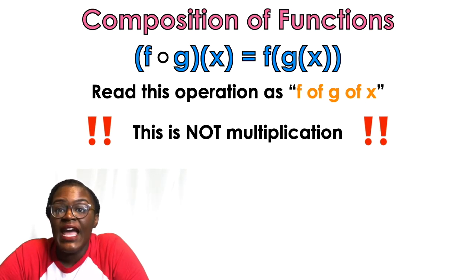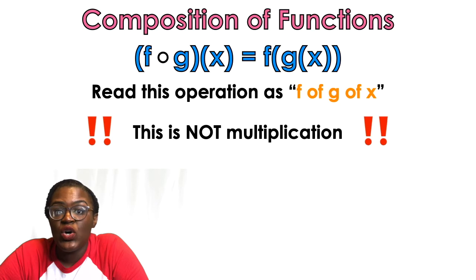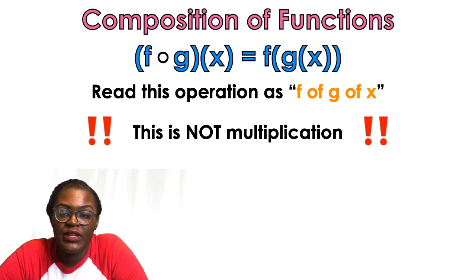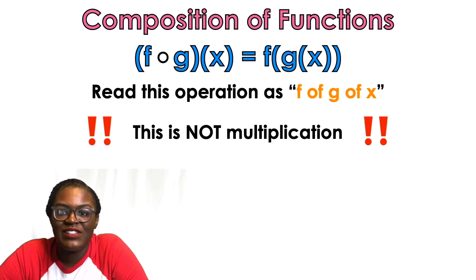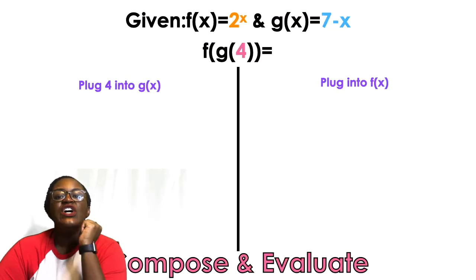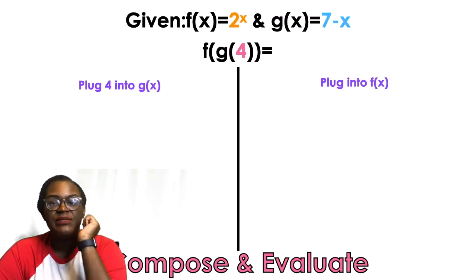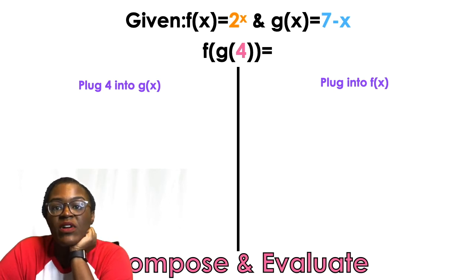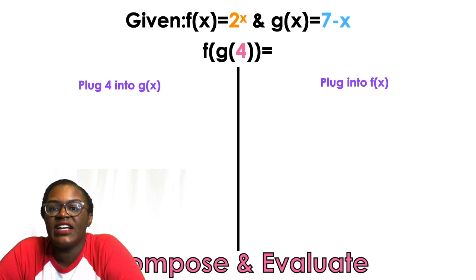The other notation is F(G(x)) — you read this as 'F of G of x.' Make sure that's what you're doing; it's not multiplication, it's different. So given F(x) = 2^x and G(x) = 7 minus x, the function notation says F of G of 4.